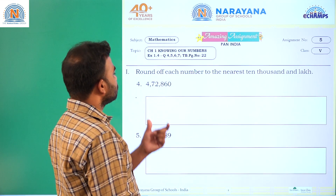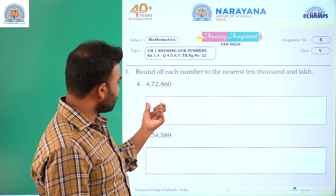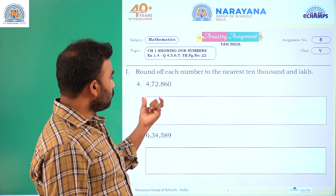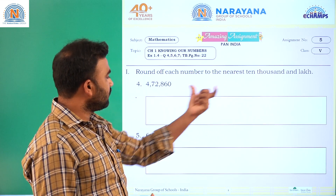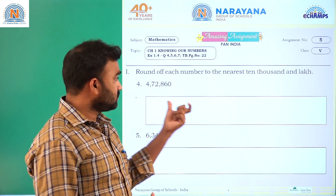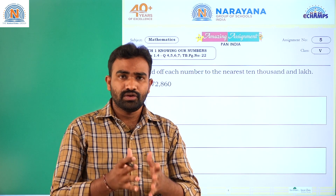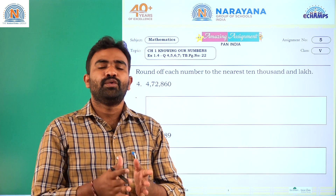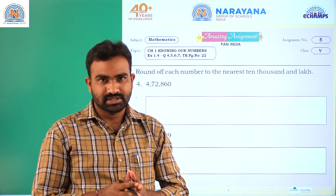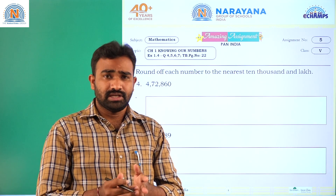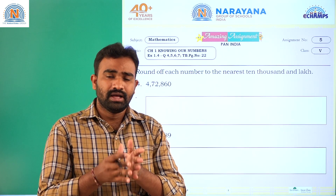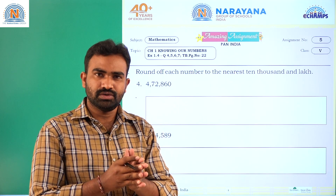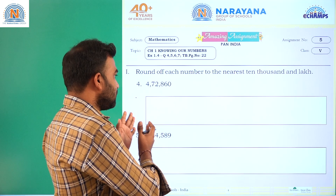The given number is four lakhs seventy-two thousand eight hundred sixty. We need to round off this number to the nearest ten thousand and nearest lakh. First, to round off to the nearest ten thousand, we check the thousands place. If the thousands place digit is from zero to four, we make the thousands, hundreds, tens, and ones places all zeros.